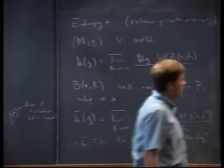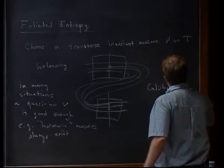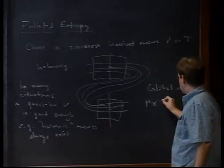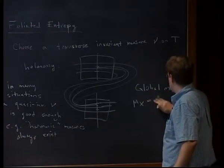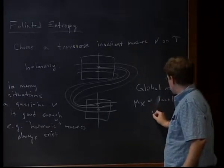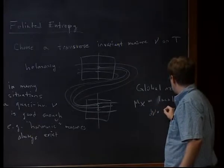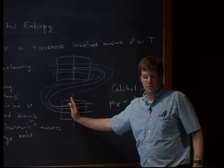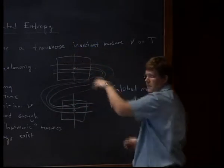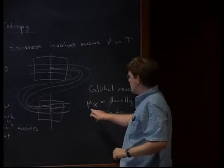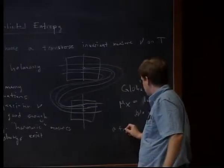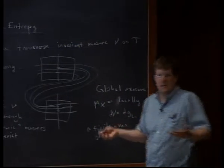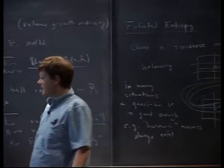Given that situation, we can build a global measure mu on X. I can build a global measure mu_X that is locally just d-nu cross d-g on each leaf — the Riemannian measures on each leaf times the transverse measure nu — and that gives me a measure on product sets. Even though it's not a global product, this measure is a global measure. So that's a finite measure on X, assuming nu is finite.